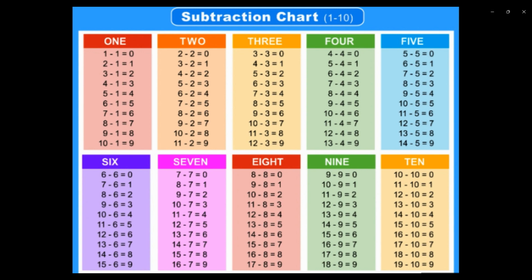Now, 3. 3-3 equals 0. 4-3 equals 1. 5-3 equals 2. 6-3 equals 3. 7-3 equals 4. 8-3 equals 5. 9-3 equals 6. 10-3 equals 7. 11-3 equals 8. 12-3 equals 9.